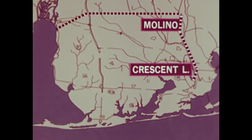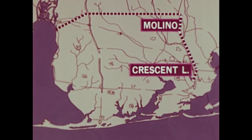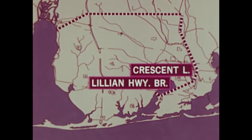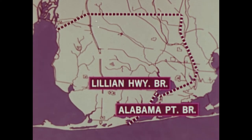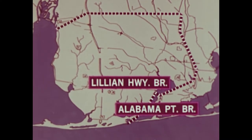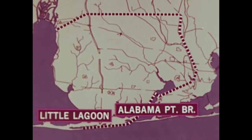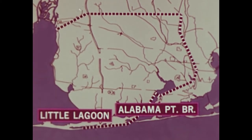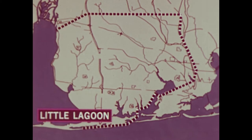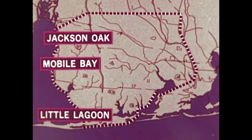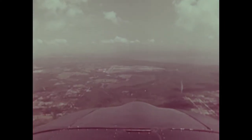The eastern boundary continues south to Crescent Lake along Bayou Marcus to Perdido Bay, along the eastern edge of Perdido Bay to the Lillian Highway Bridge, then across the bridge and south along the western edge of Perdido Bay to Alabama Point Bridge. The southern boundary is a line one-half mile inland from the Gulf of Mexico, from Alabama Point Bridge to Little Lagoon. The western boundary goes from Little Lagoon to the western end of the intercoastal waterway along the eastern shore of Mobile Bay to Jackson Oak, Alabama.